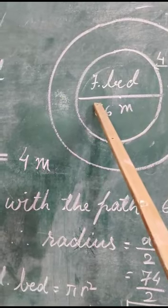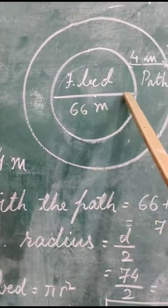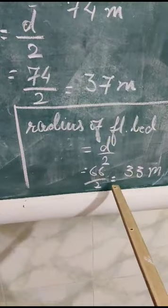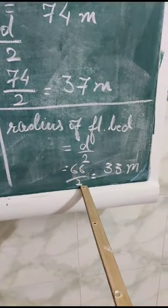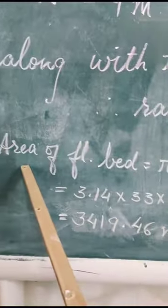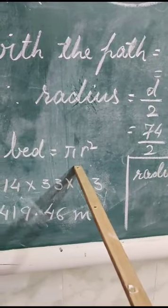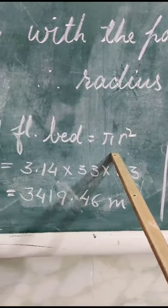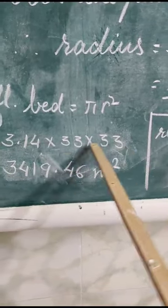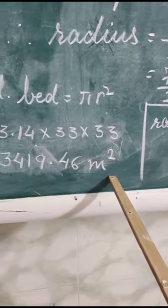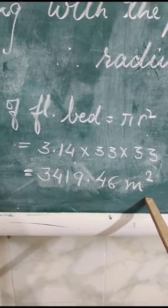Okay. Now you have to find out the area of the flower bed. Diameter is given and you will take out the radius of the flower bed. That will be divided by 2, which is 33 meters. Now you can find out the area of the flower bed by putting the value in the formula pi r squared—3.14 into 33 into 33. Then you will get the area of the flower bed.